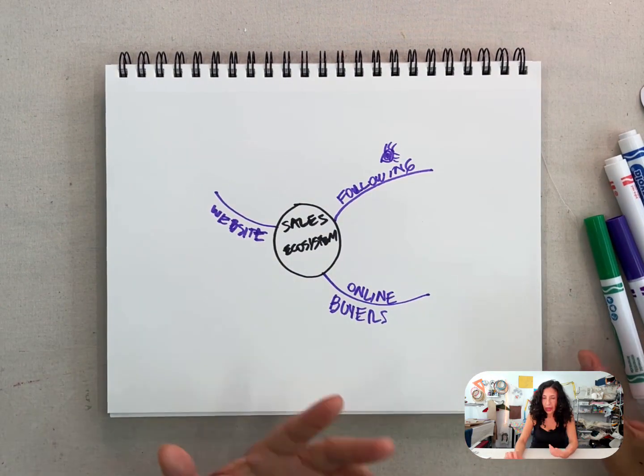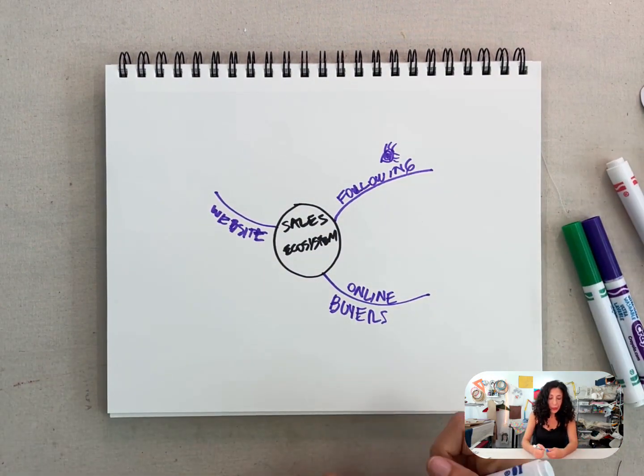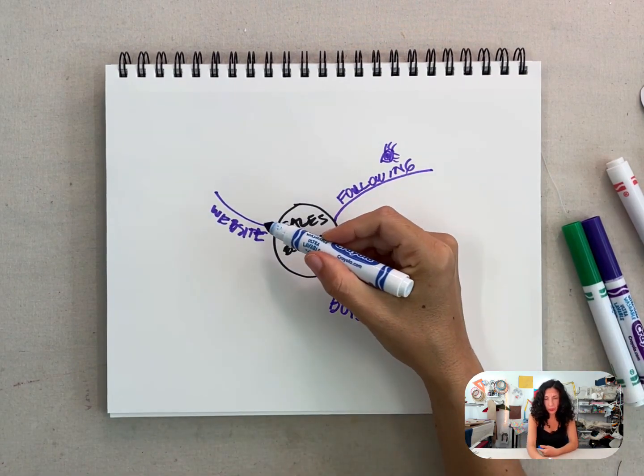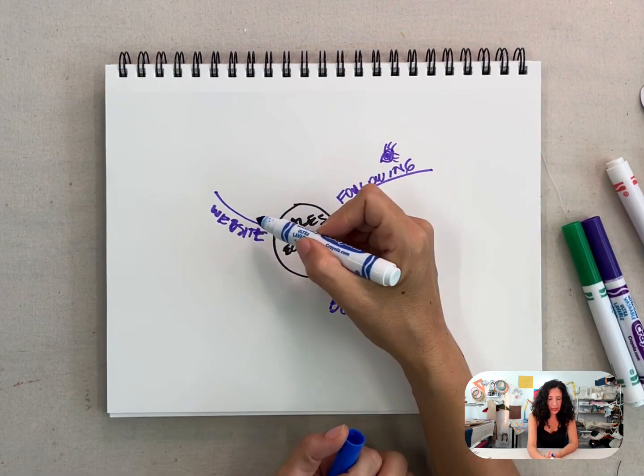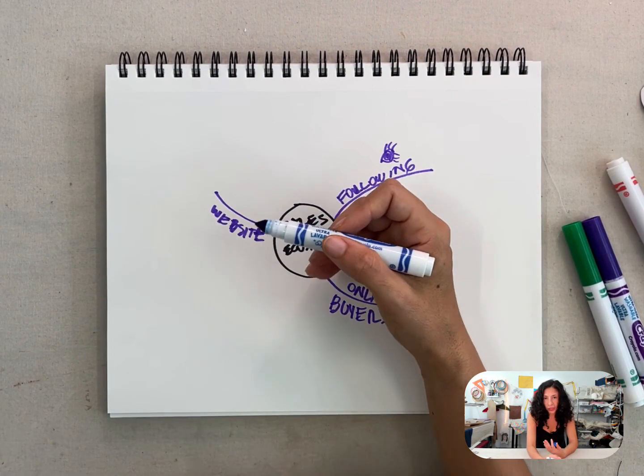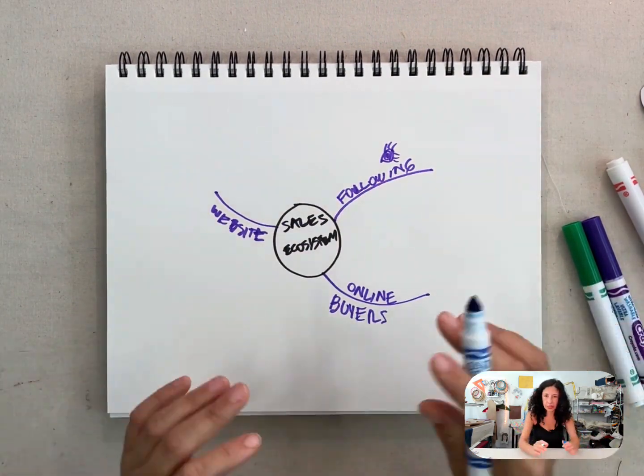And how do you do this? So basically the website, you need a simple website, which you know what it is, it's like a Wix or Shopify. I like Shopify because it integrates with everything and it's simple.